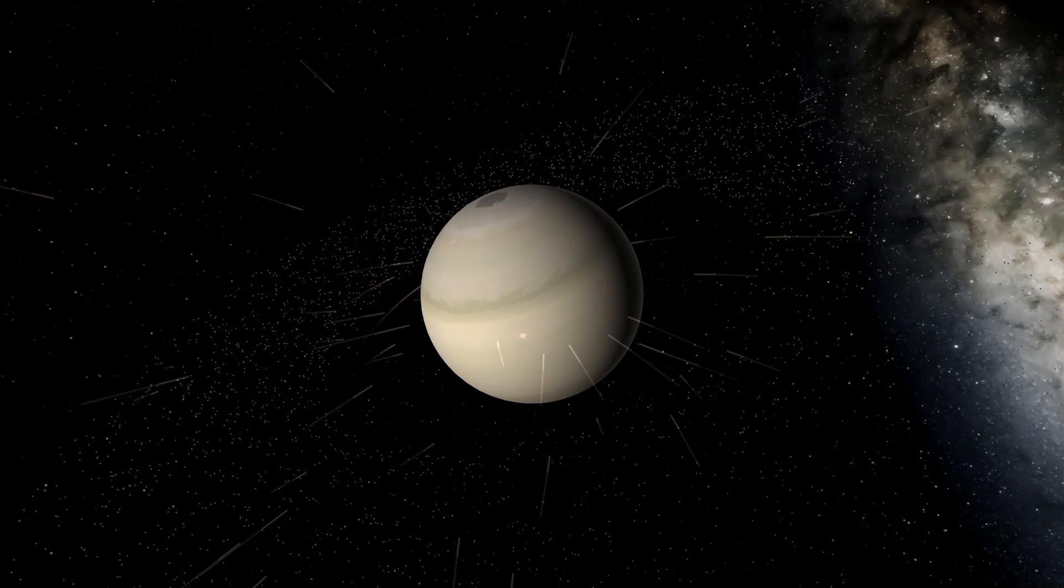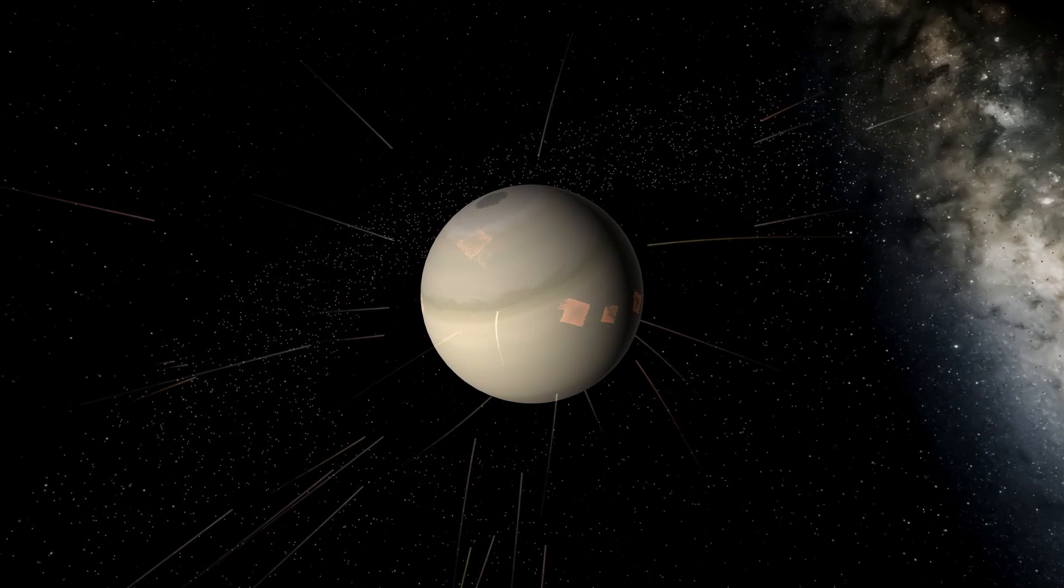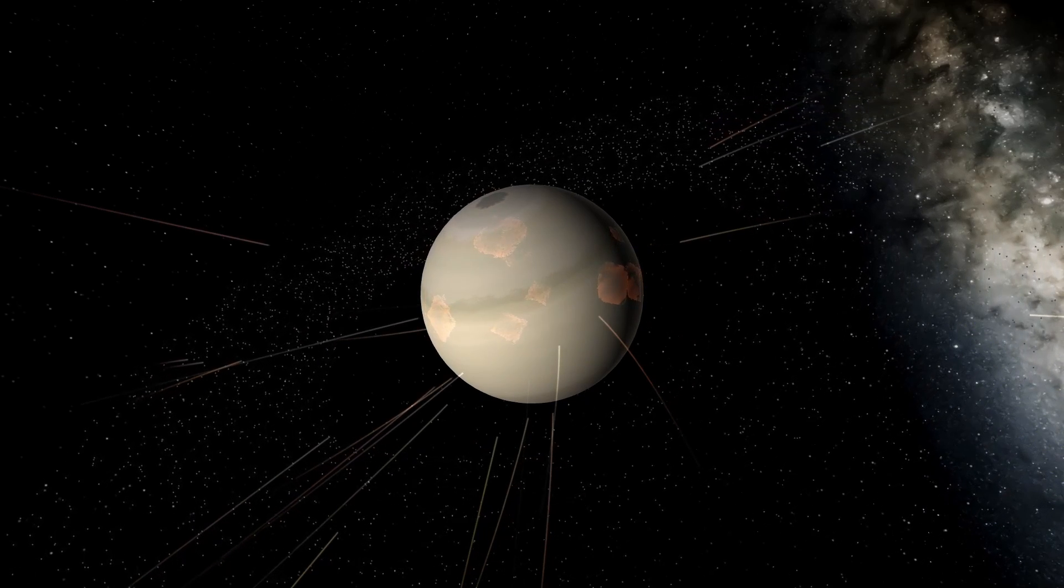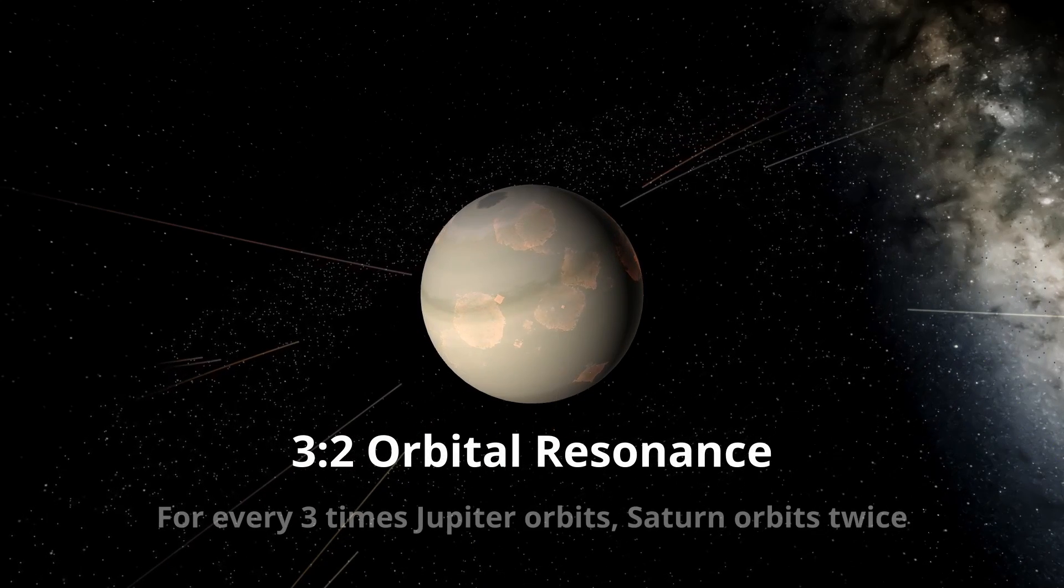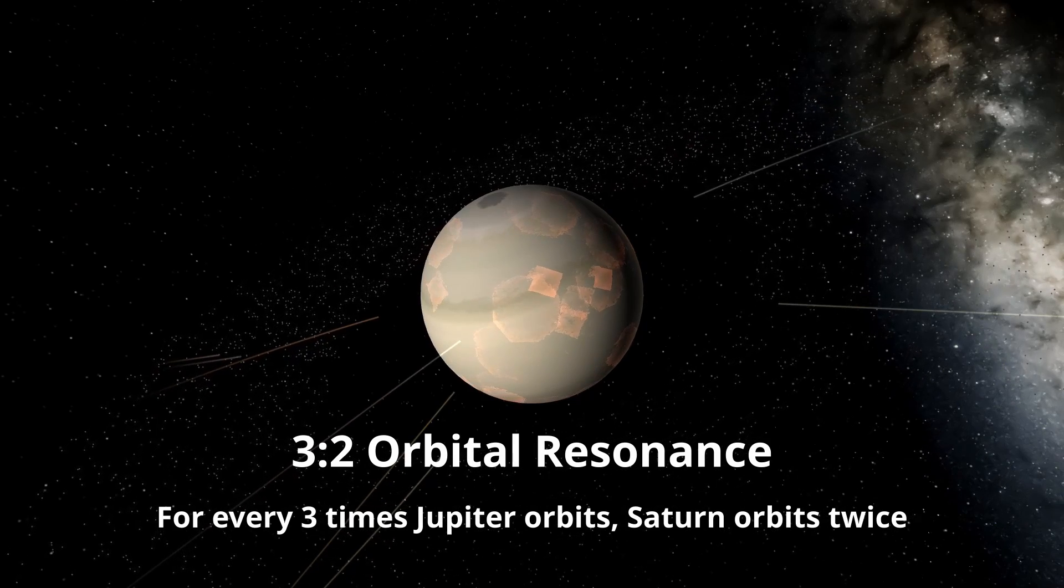A second planet formed further out and started doing the same thing, moving inwards towards the Sun. This is the beginning of Saturn. Eventually, it reached a point where they caught each other in a 3-2 resonance. This is where for every three times Jupiter orbits the Sun, Saturn orbits twice.